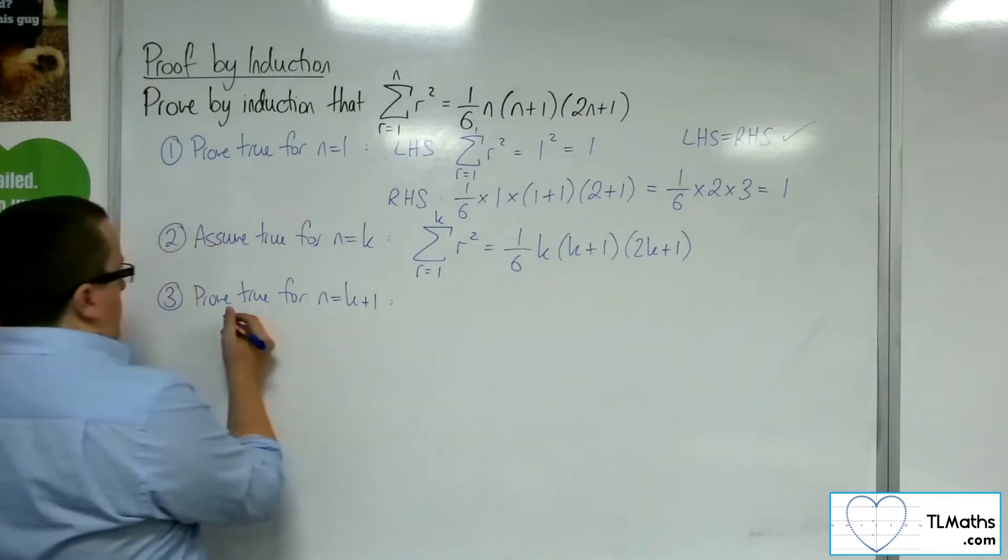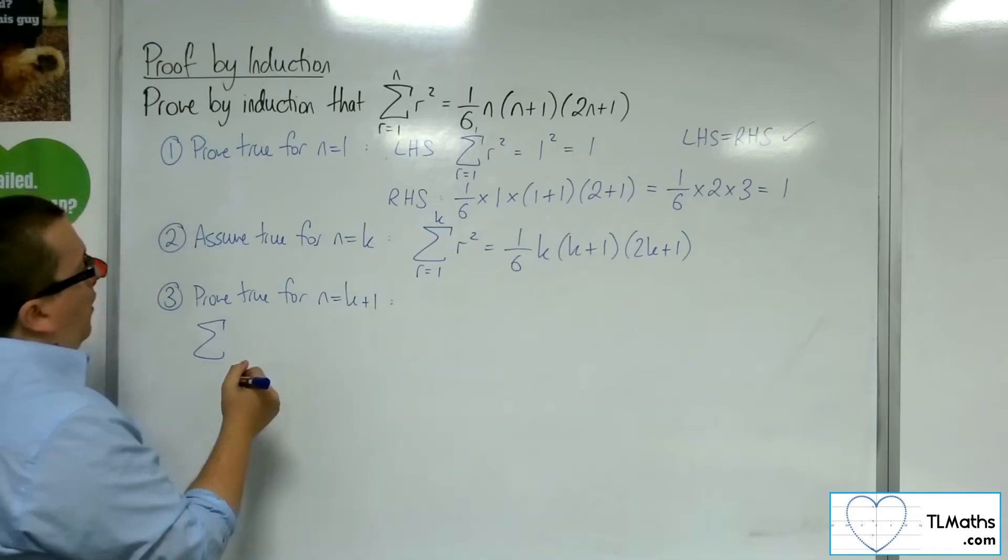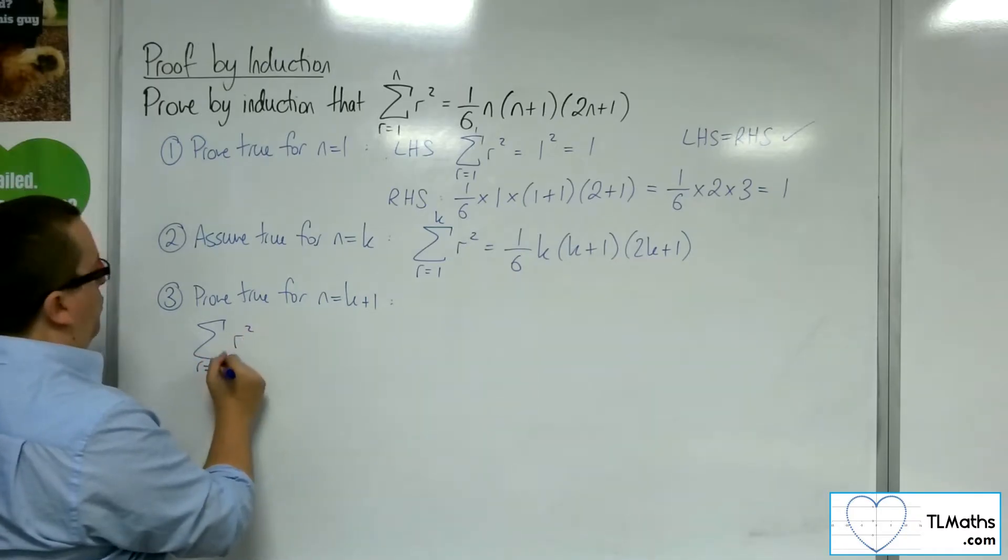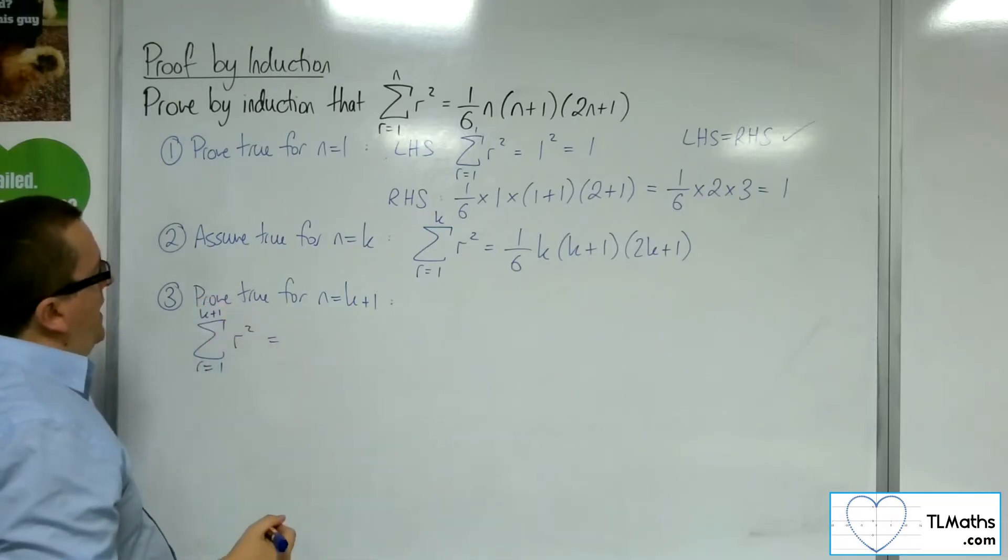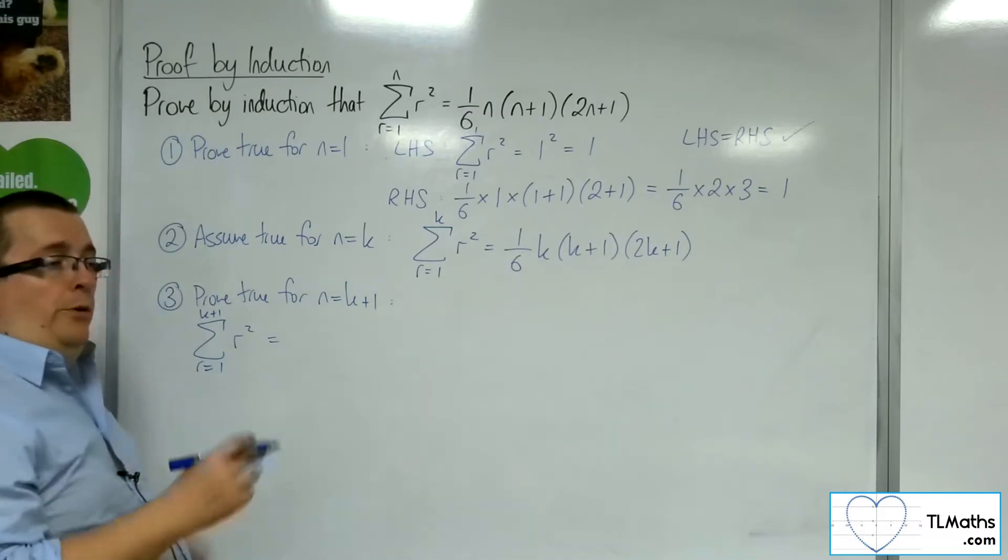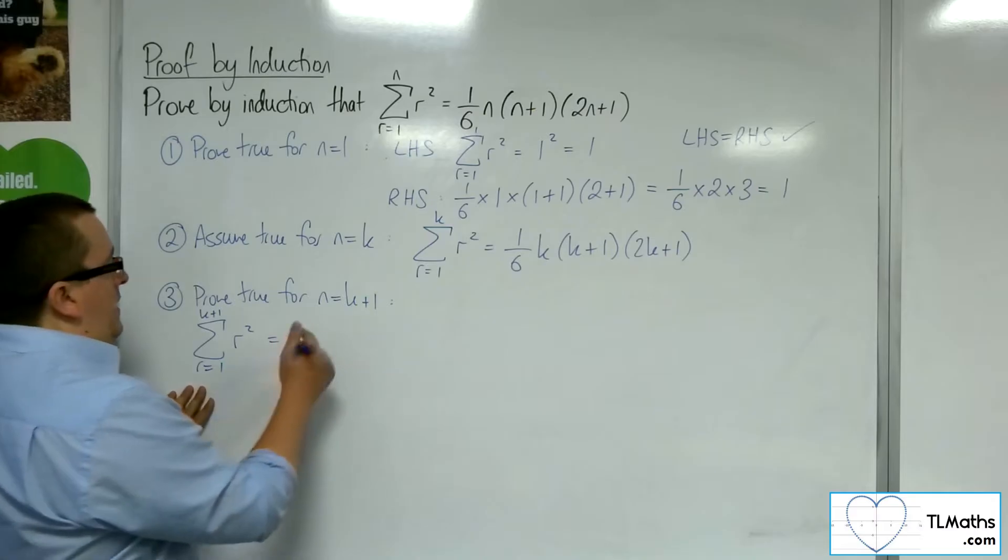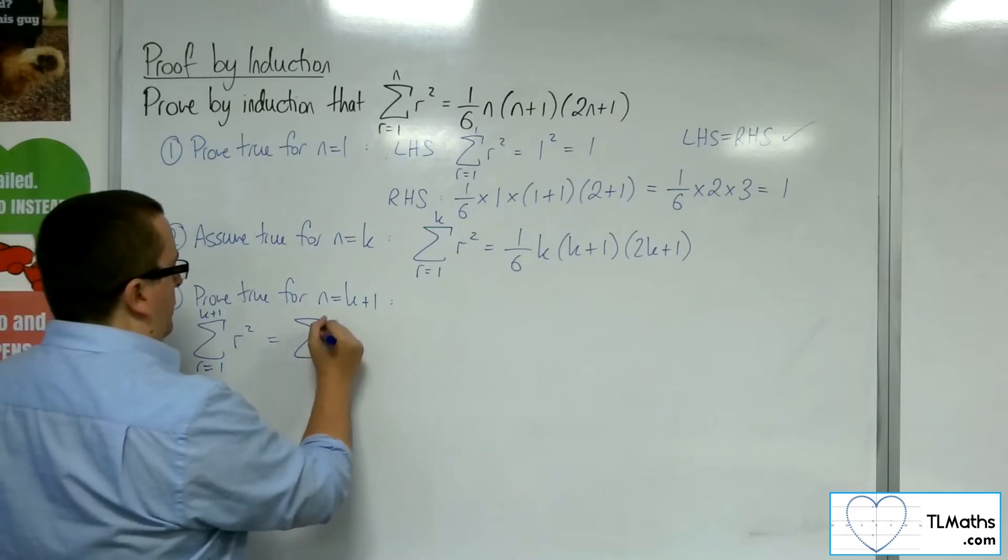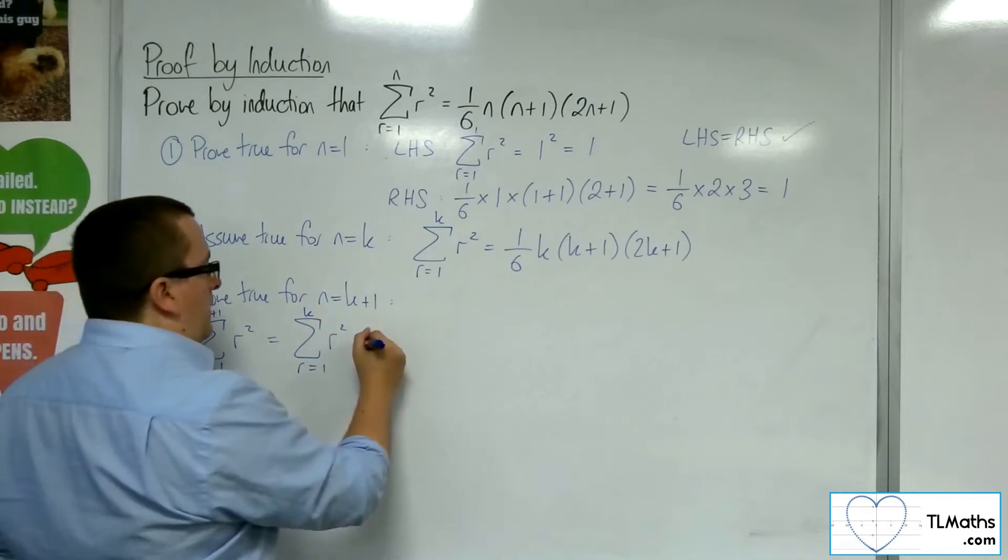So, we've got the summation of r squared from r is 1 up to k plus 1. Now, using our summation knowledge here, what we can do is we can split that summation apart. We've got here the sum from r is 1 up to k.